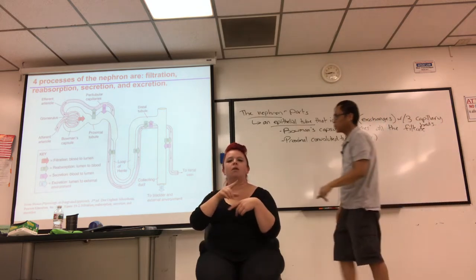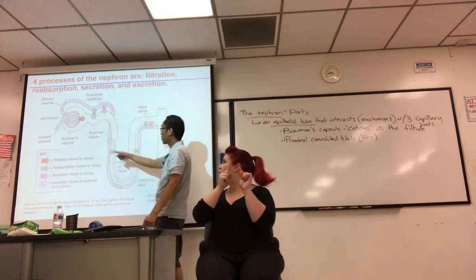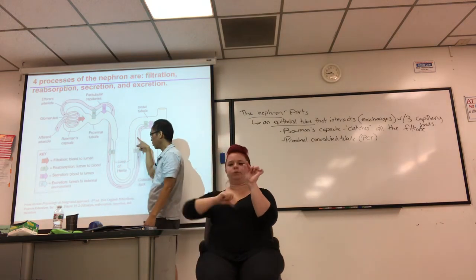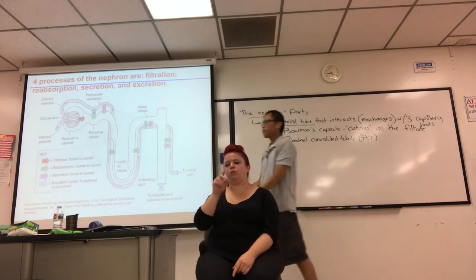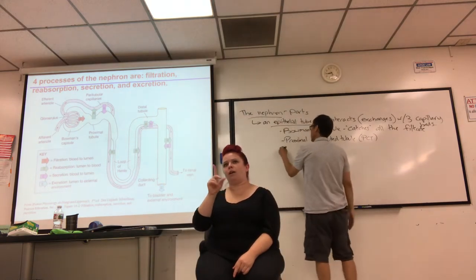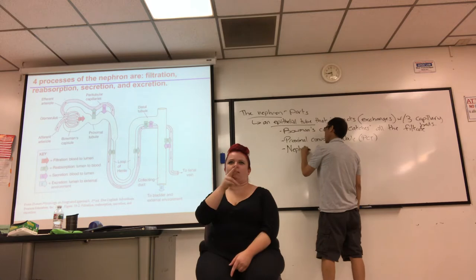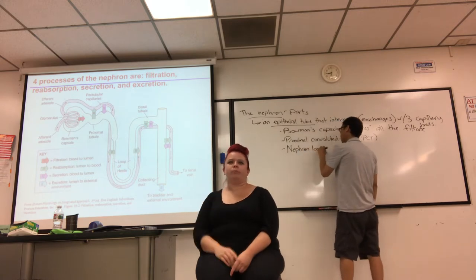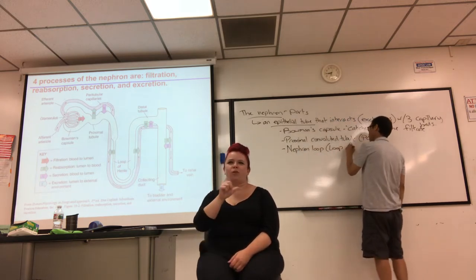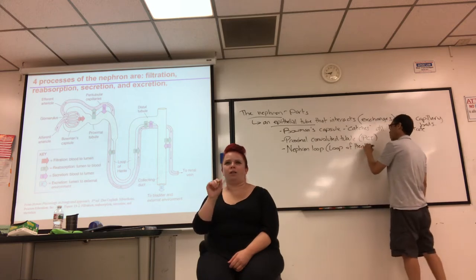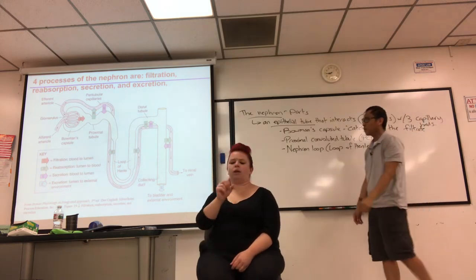As you can see, it's one continuous tube from beginning to end. The PCT is continuous with this hairpin loop — a U-turn — called the loop of Henle, or sometimes the nephron loop. I actually prefer loop of Henle.